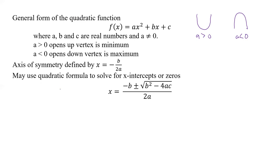Our axis of symmetry is defined by negative b over 2a. It's that line that cuts the parabola in half. You need the b part and the a part, and you just take minus b divided by 2a. A quadratic formula can also be used to solve for the intercepts or the zeros. A lot of times we're going to come up with trinomials that cannot be factored easily, so we're going to have to use our quadratic formula: minus b plus or minus the square root of b squared minus 4ac, all over 2a.